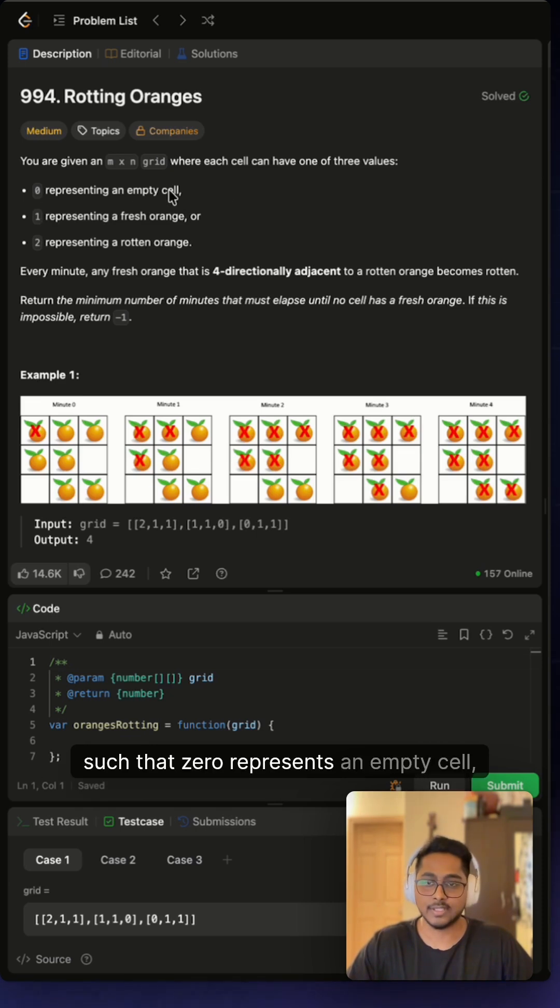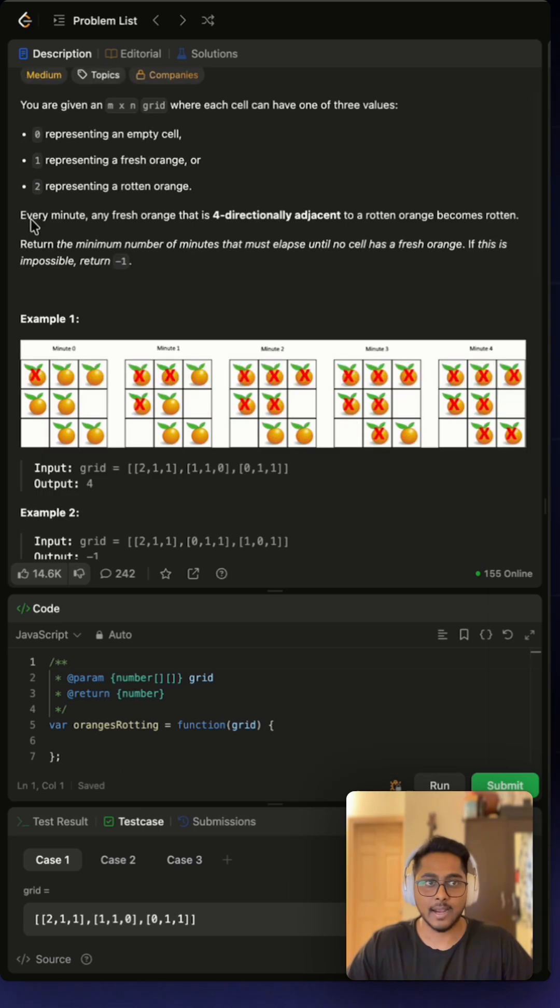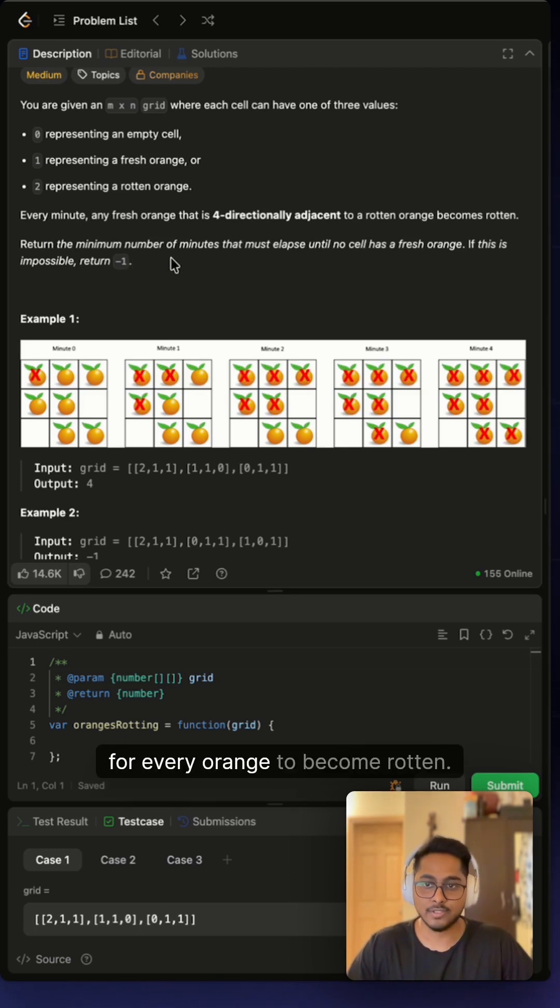has three values: zero represents an empty cell, one represents a fresh orange, and two represents a rotten orange. Every minute, any fresh orange which is directionally adjacent becomes rotten. We have to return the minimum number of minutes for every orange to become rotten, and if that is impossible,